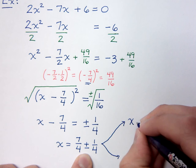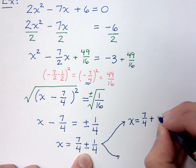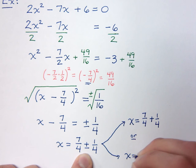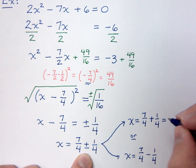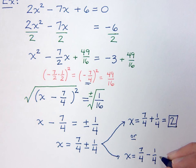So, your first solution, x equals 7 fourths plus 1 fourth. And then you've got your other one, which is x equals 7 fourths minus 1 fourth. So, here, 7 fourths plus 1 fourth is going to give you 8 over 4. And that just equals 2. And for this other guy, you're going to get 6 over 4. And that would reduce to be 3 halves.